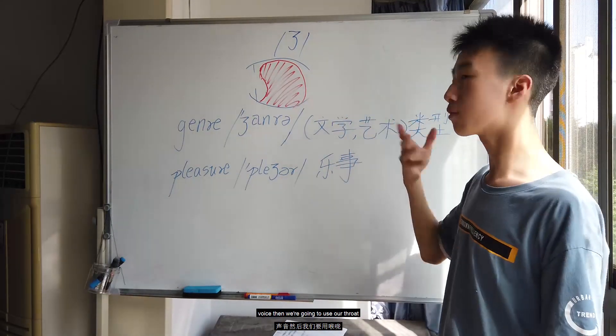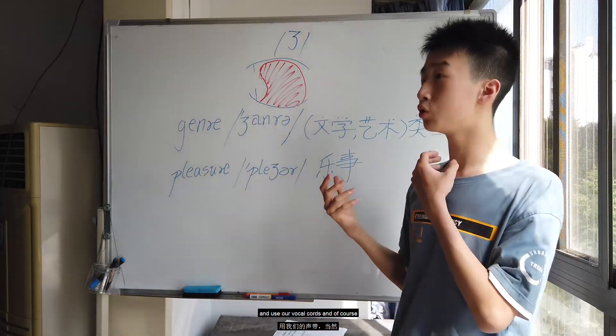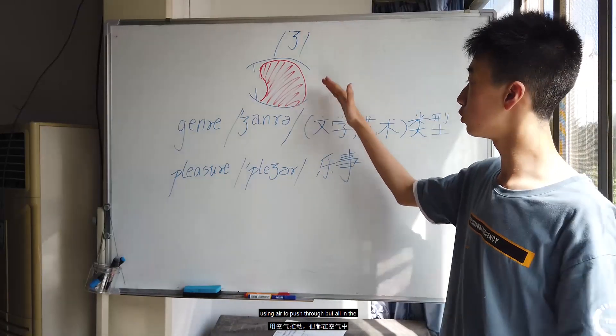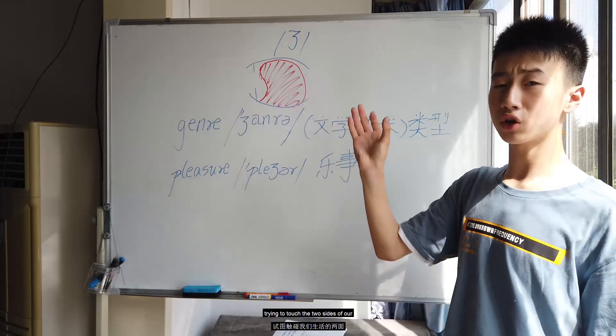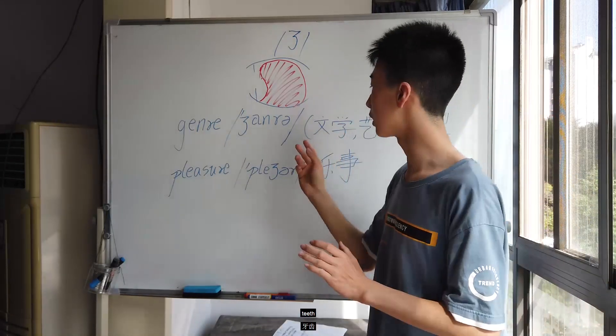And because it's a fricative and a voiced sound, we're going to use our throat, use our vocal cords, and of course, using air to push through, but all at the same time, having the two sides of our tongue touch the two sides of our teeth.